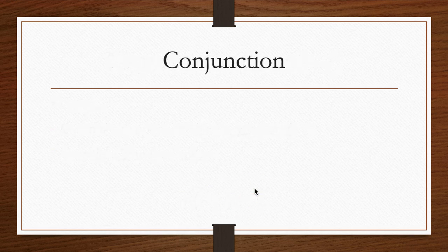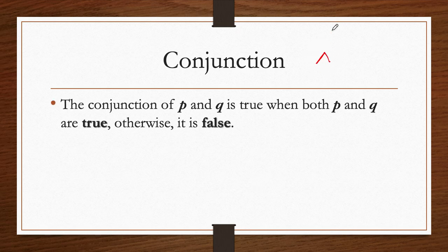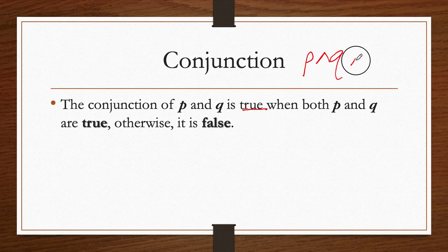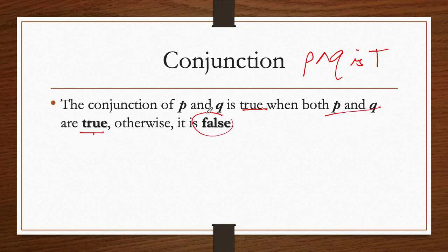Let's move on to conjunctions. The conjunction uses the wedge symbol. The conjunction of P and Q is true if and only if both of them are true. If they're not both true, it will always be false. In illustrating the truth values of a conjunction, we will need a truth table since it's a compound proposition.